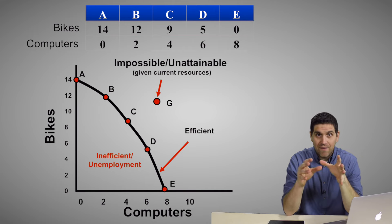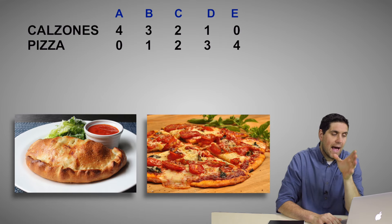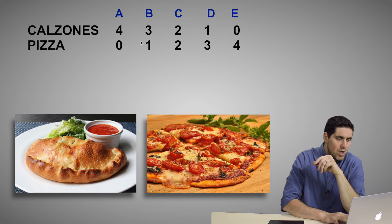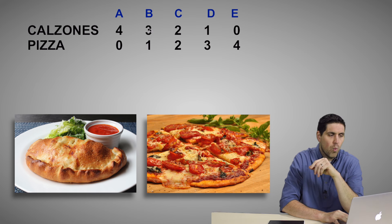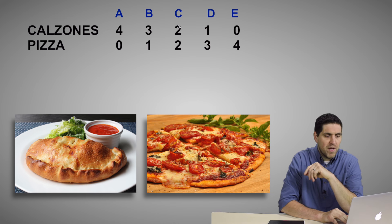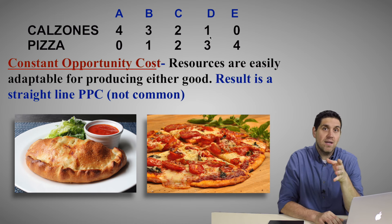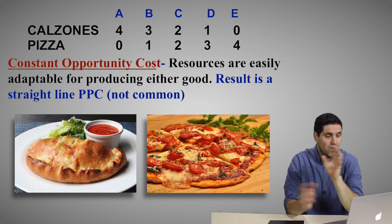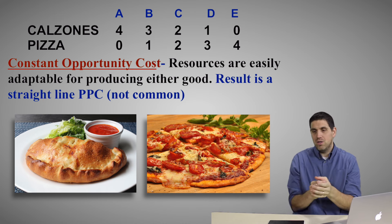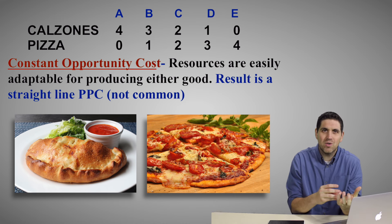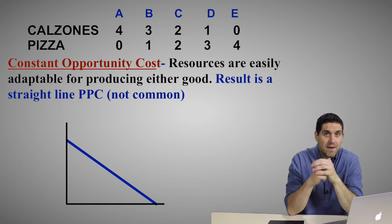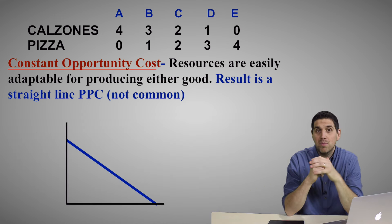There are a couple of different shapes to this graph. Let's talk about calzones and pizzas. Notice: when you produce another pizza, you lose one calzone. When you produce another pizza, you lose another calzone. The opportunity cost here is constant — every single time you produce a pizza, you lose one calzone. That's called constant opportunity cost, and it shows you that resources between the two products are very similar. This results in a production possibilities curve that's a straight line.